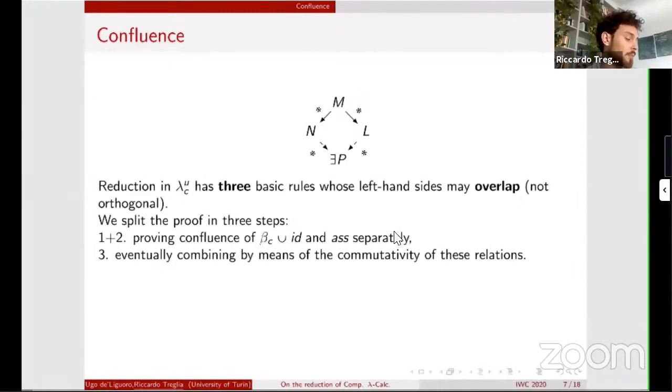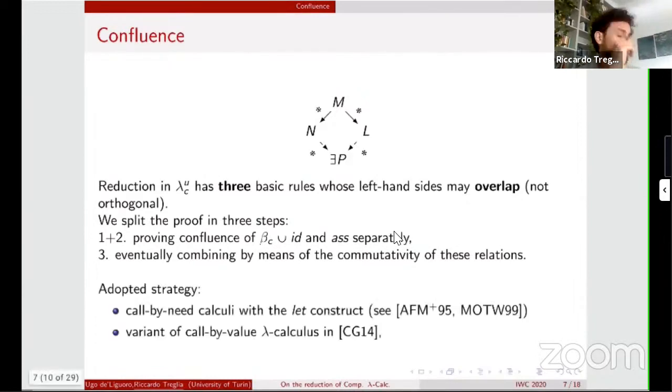Since Makoto Hamana two years ago approved the confluence of Moggi's computational lambda calculus by using his tool polySol by checking critical pairs. So now, finally, we can embark on the proof of confluence of our calculus, but it's not very easy since AS reduction can may overlap with itself and with the others reduction steps. So we split the proof in three parts, proving the confluence separately of beta plus ID and AS separately, and in the end, eventually combining by means of a commutativity lemma.